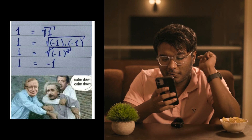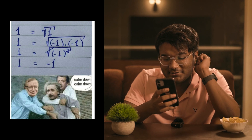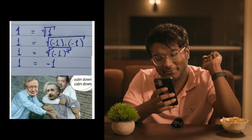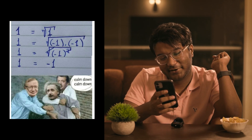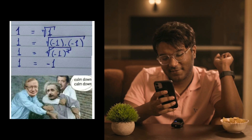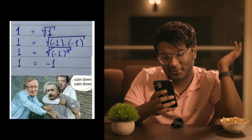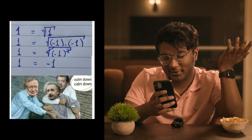One is equal to square root of one. One is equal to square root of minus one times minus one. And that becomes minus one. So one is equal to minus one.